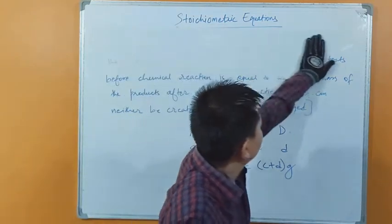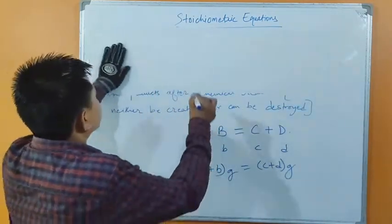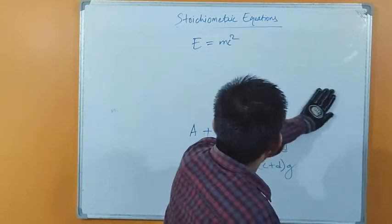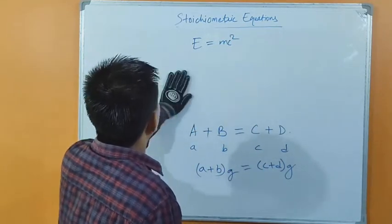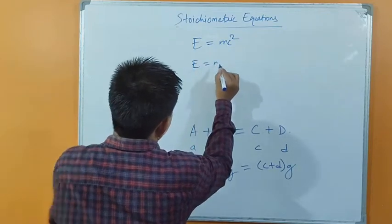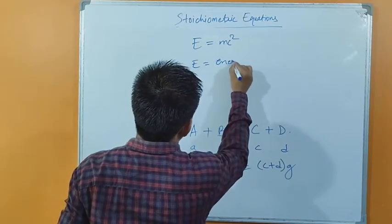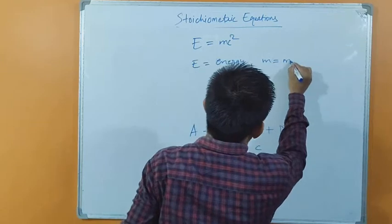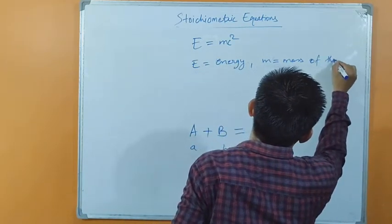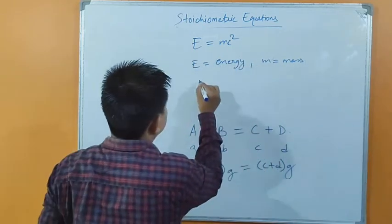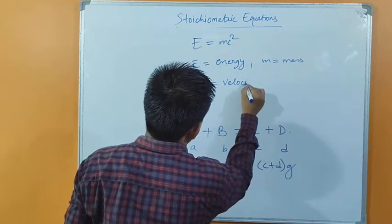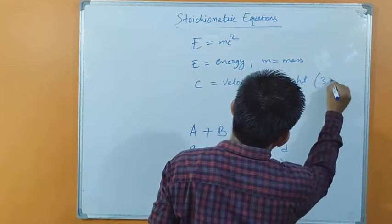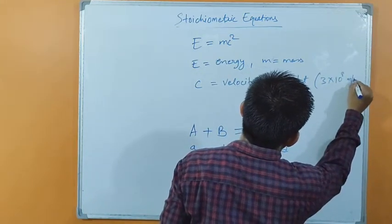A very famous mathematician named Einstein gave us the equation E = mc², where E is the energy, M is the mass of the substance, and C is the velocity of light. The velocity of light is 3 × 10⁸ meters per second in air.